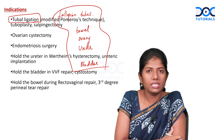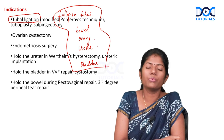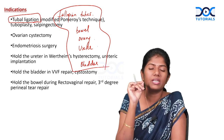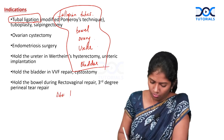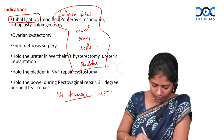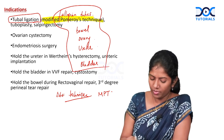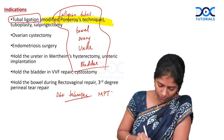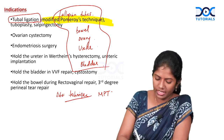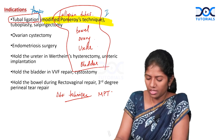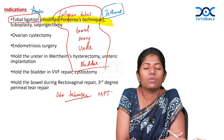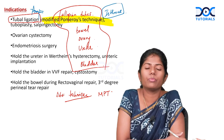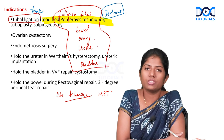The examiner may ask about the sterilization procedure: the technique is Modified Pomeroy's Technique (MPT), and it should be performed at the isthmus of the tube, not the ampulla. The ampulla is the site of fertilization and must be preserved. Therefore tubal ligation is done at the isthmus.